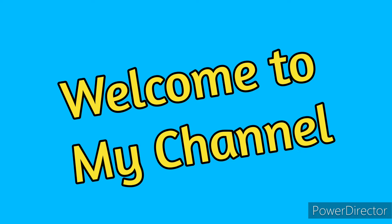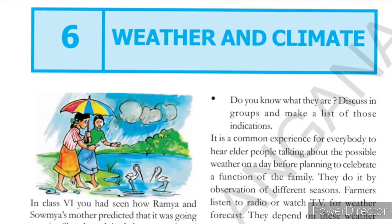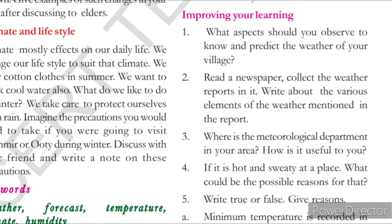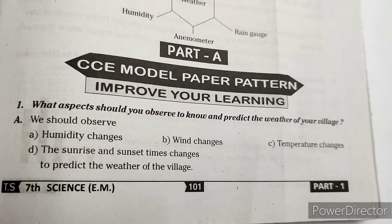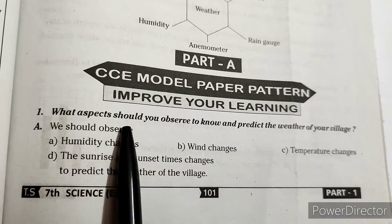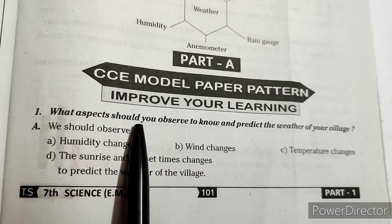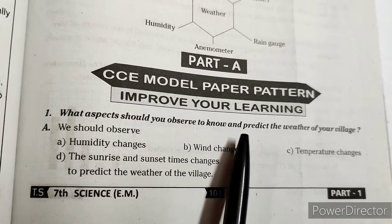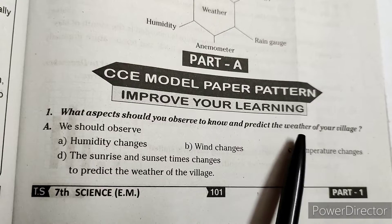Hello kids, welcome to my channel. Today we are going to see seventh class science, sixth lesson: Weather and Climate question answers. Let's start — improve your learning. First question: what aspects should you observe to know and predict the weather?